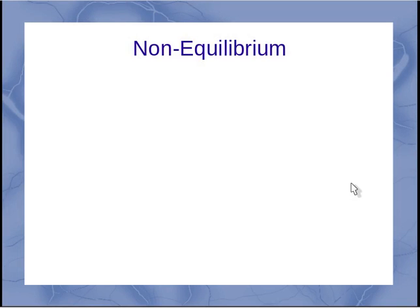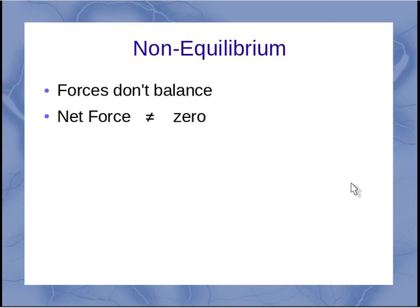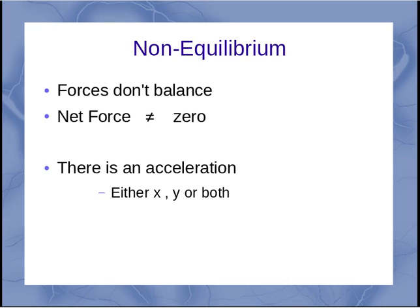The other side is non-equilibrium. Here, the forces don't balance, and that means my net force is not equal to zero. So I have to have an acceleration. This acceleration could be in x, could be in y, or both. I could have acceleration components in x and y. That means my velocity must change, because there is an acceleration.